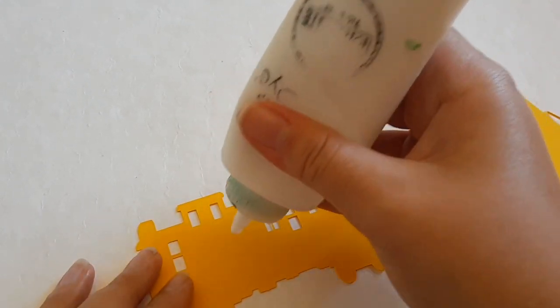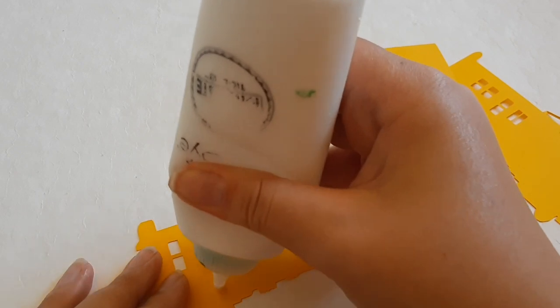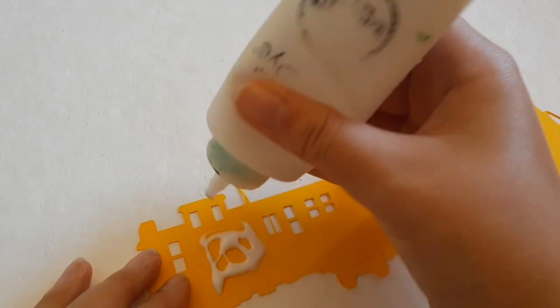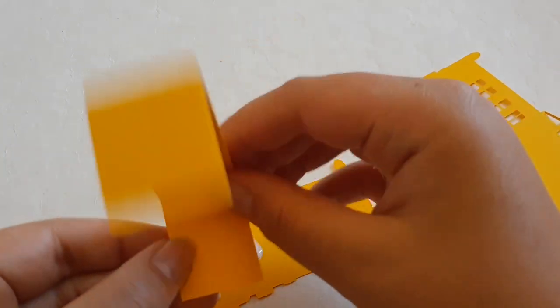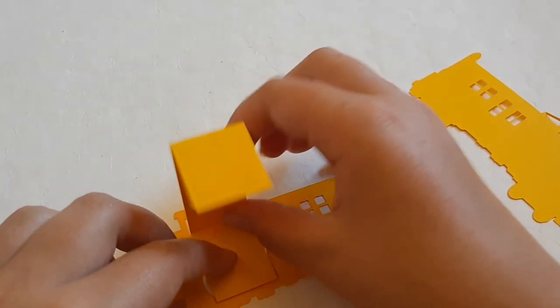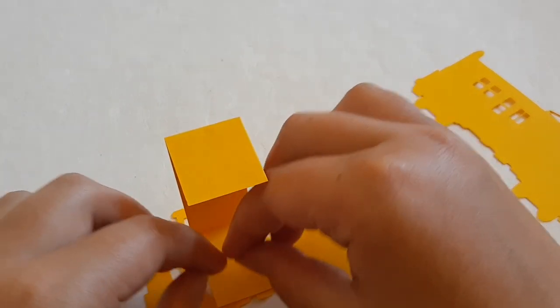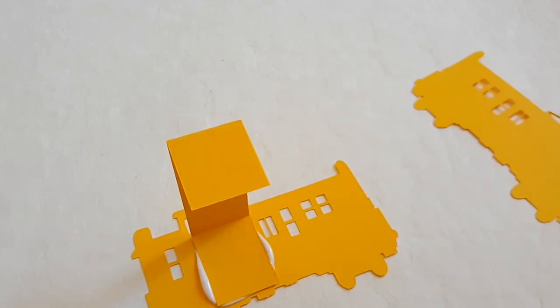So I'm just taking my glue here and adding a little bit onto our caboose, and just sticking my piece of paper on here. And now I'm going to let this dry.